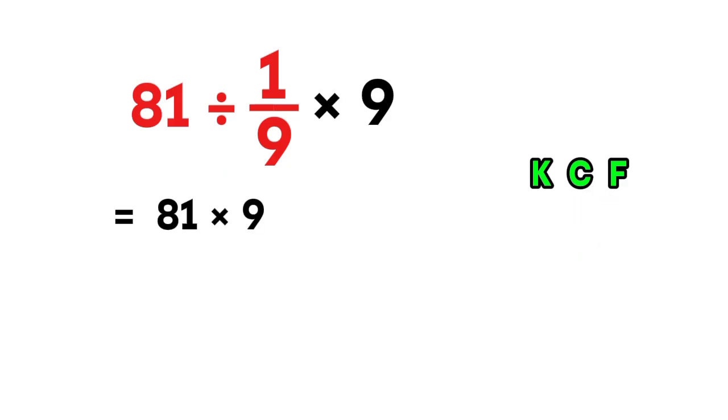So we write it as 81 times 9. Keep the first fraction, change division to multiplication, flip the second fraction, and we still have times 9.